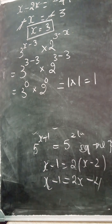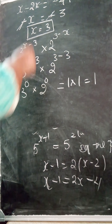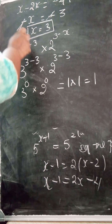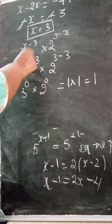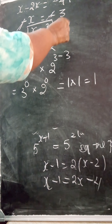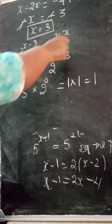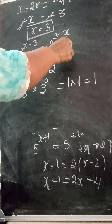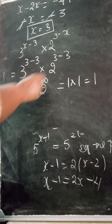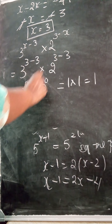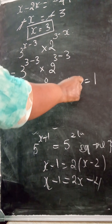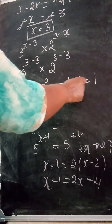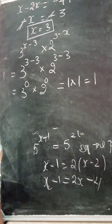So x value is 3. 3 minus 3 is 0 for the first term, and 3 minus 3 is 0 for the second term. Anything raised to the power of 0 is 1, so 1 × 1 equals 1.